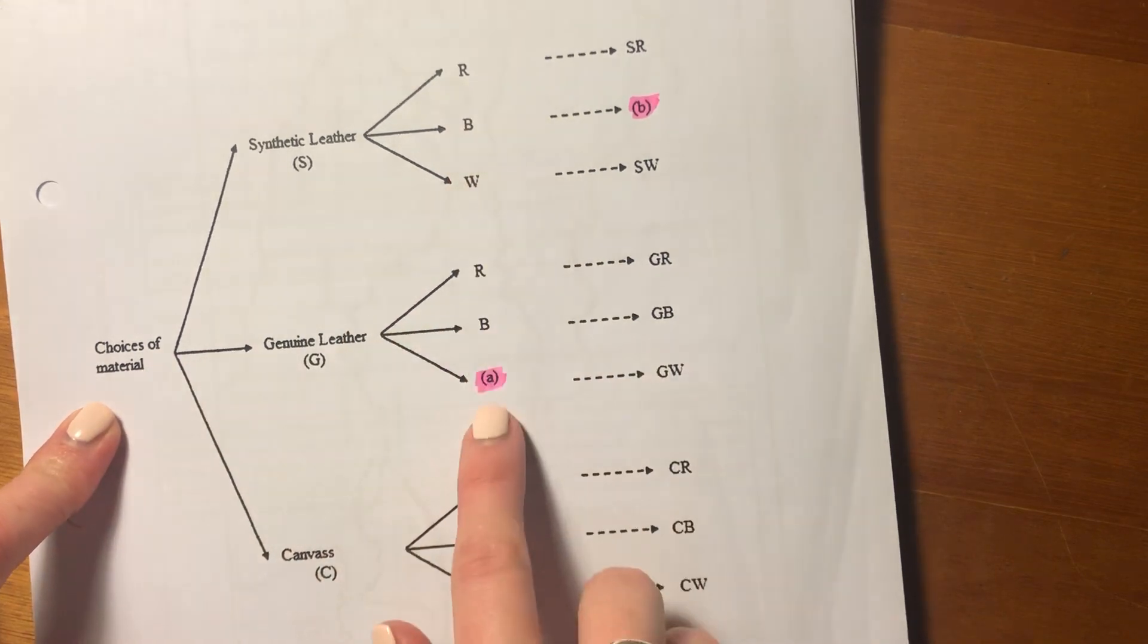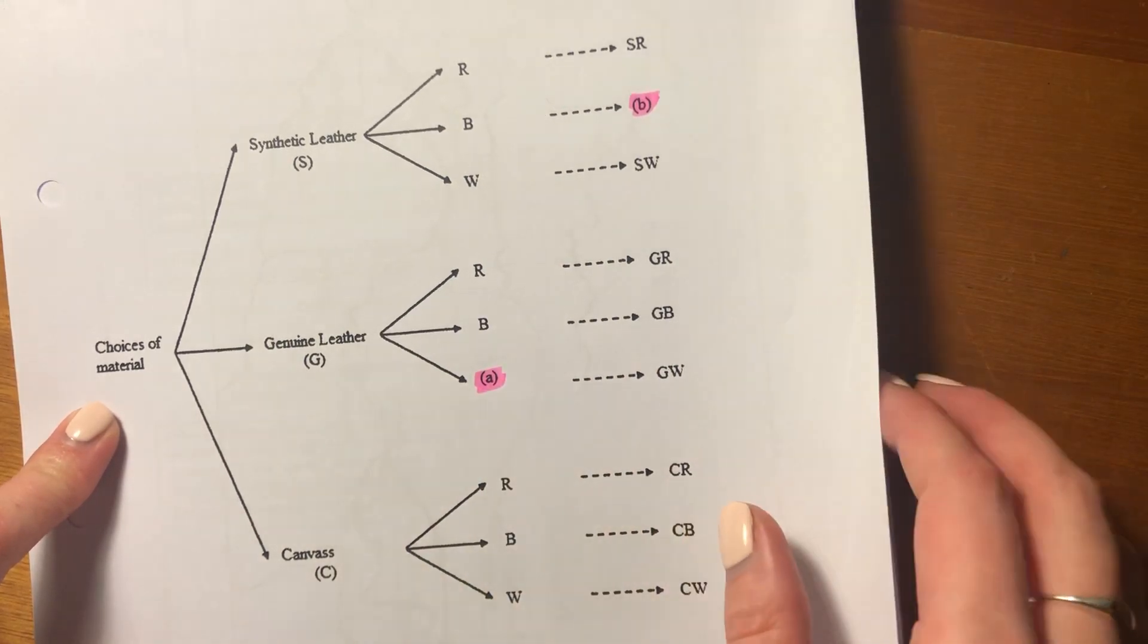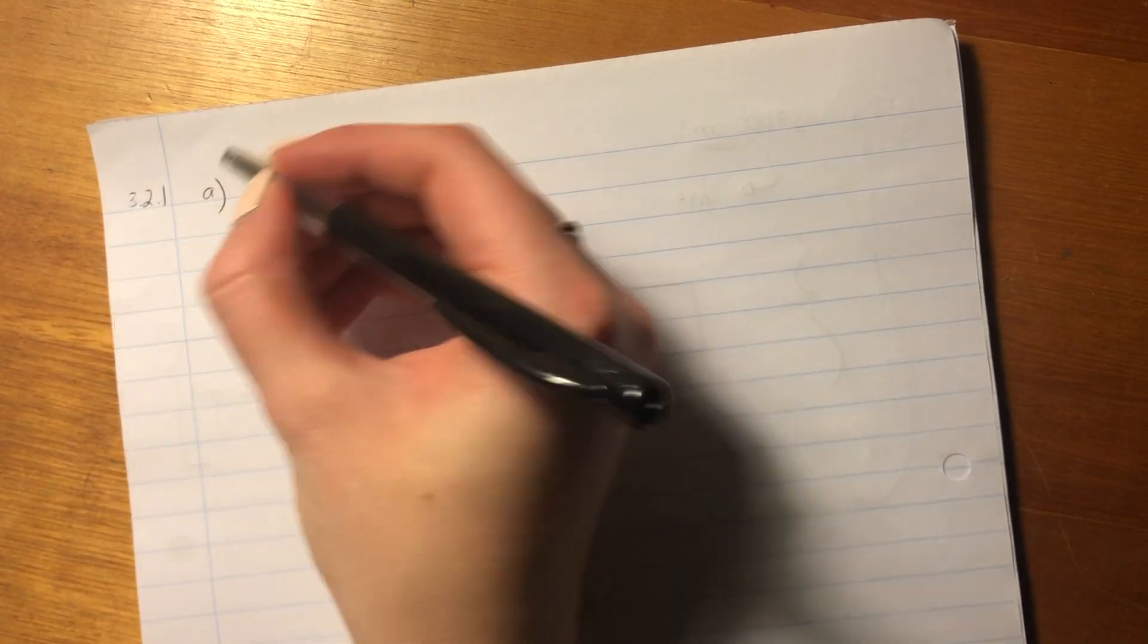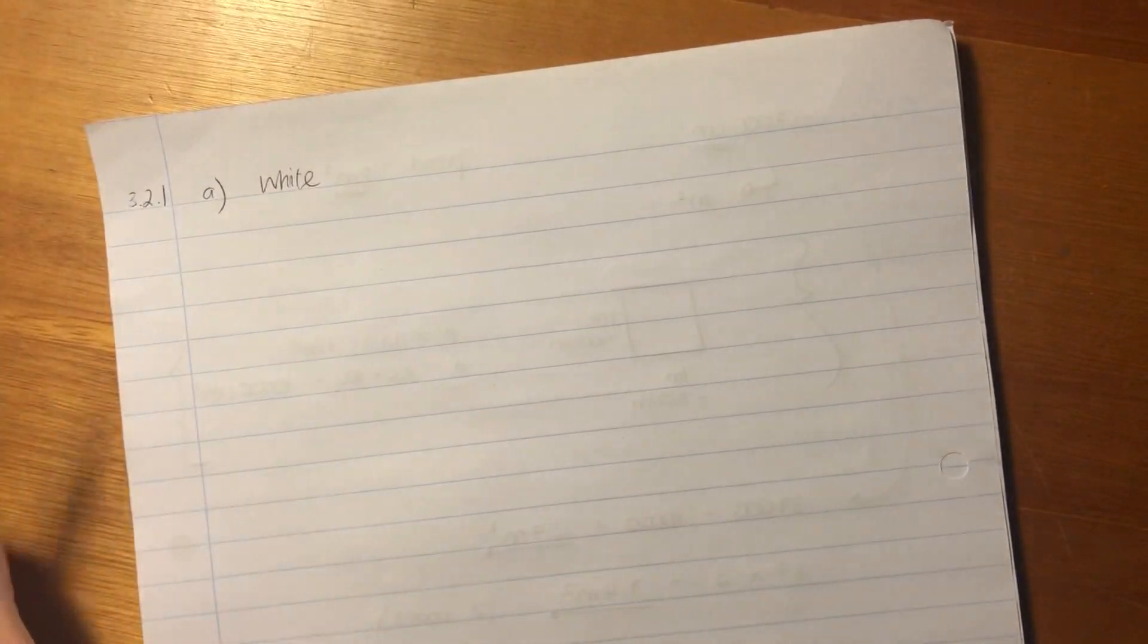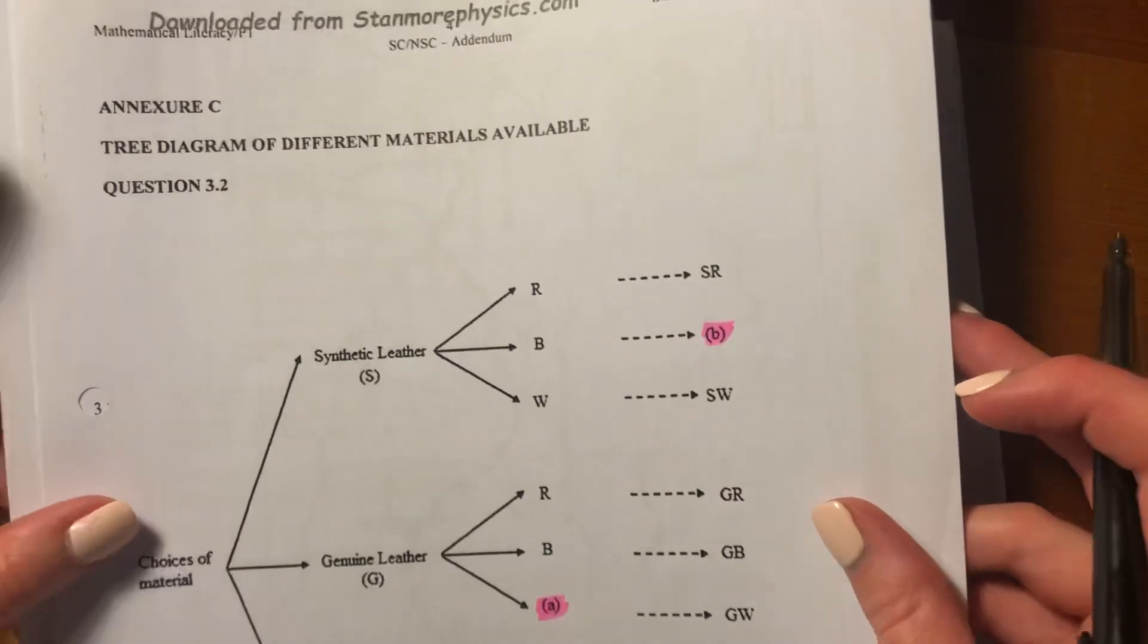So B is going to be white, right? RBW, you can see all of them are RBW. So A over here is going to be white. Just make sure that you write it out nicely. So you say 3.2.1 and you say A is white. You can just say W or you can say white, because that's the color.